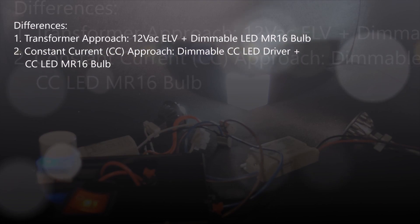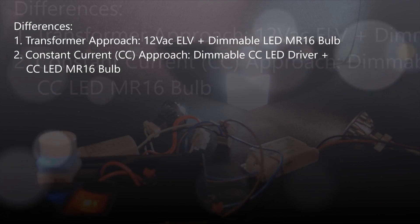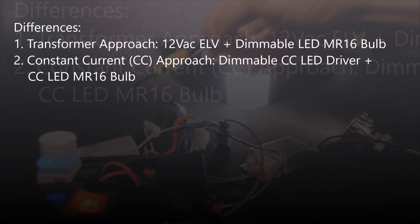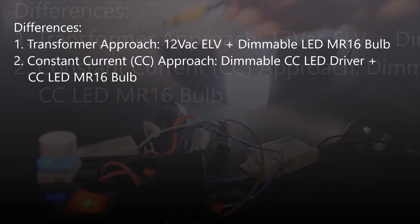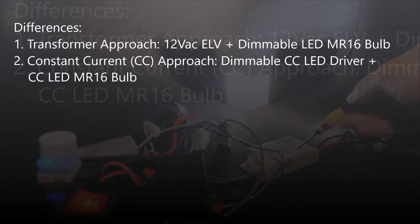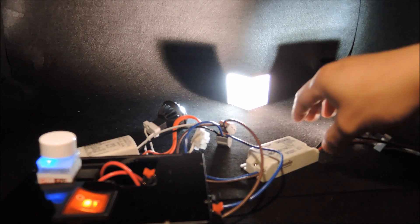Now the difference between the two approaches is that the same 12-volt AC transformer that was connected to the halogen before remains unchanged, but you'll need a dimmable version of the 12-volt AC or DC LED MR16 bulb. On the other hand, the constant current approach requires a dimmable LED driver and there's no dimmable LED bulb in this case.